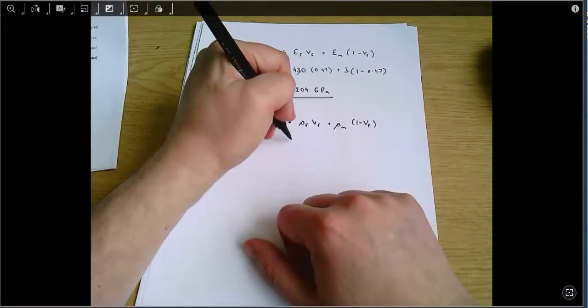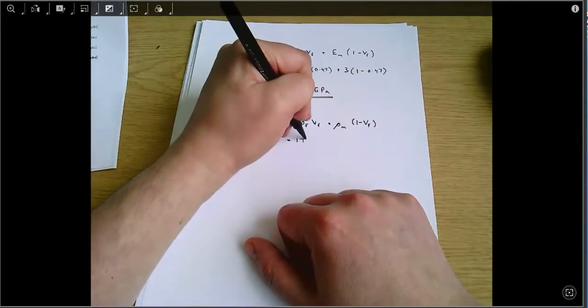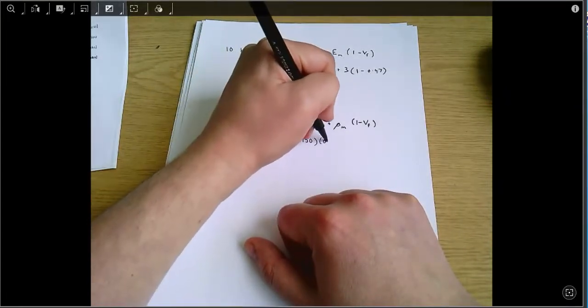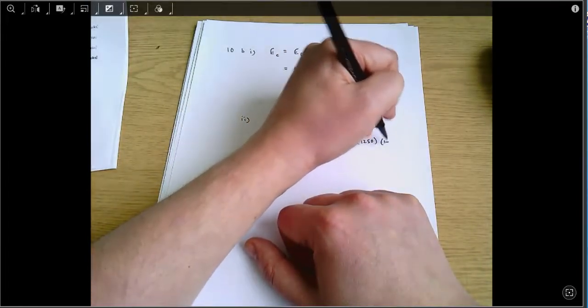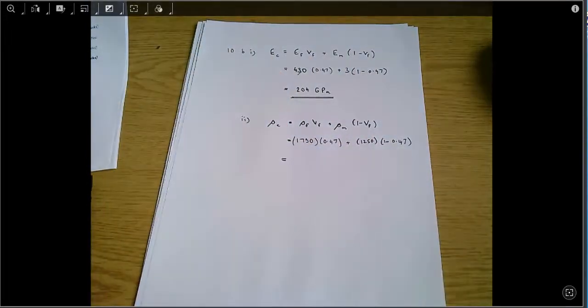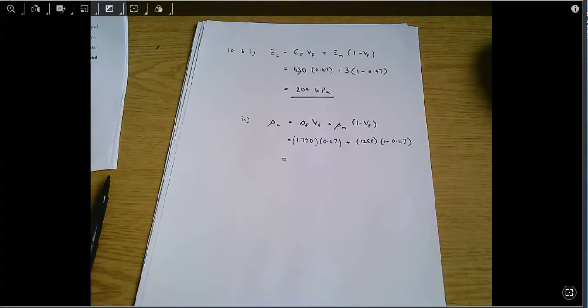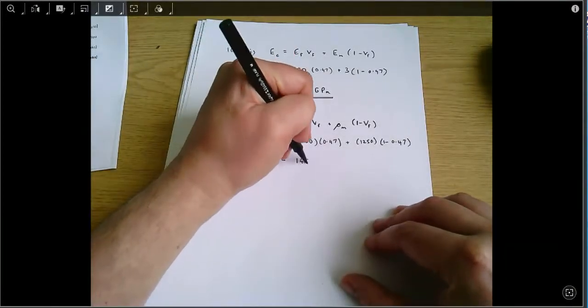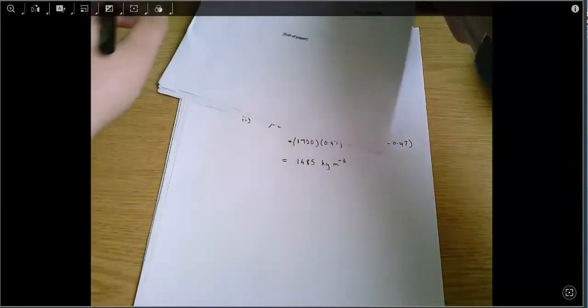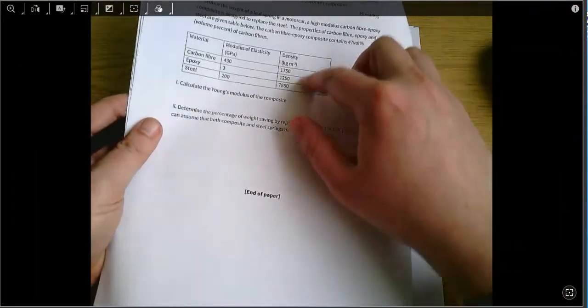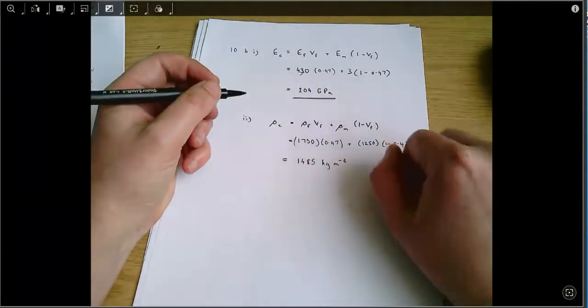And again, we know all of those things. That is 1750 times 0.47 plus 1250 times (1 minus 0.47), which is 1485 kilograms per cubic meter. It's going to have the same units as the densities that I was working with from the question. So that's the density.